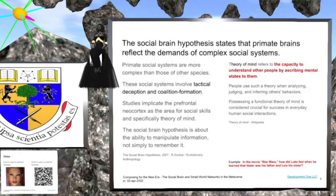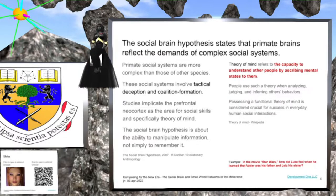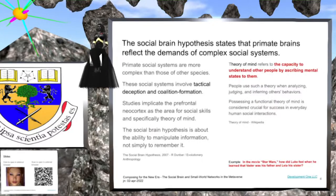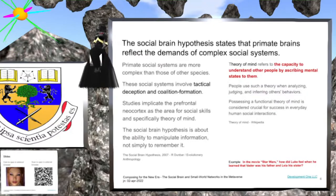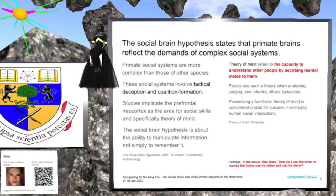In essence, we are running mental simulations in our brains — one for each relationship that we maintain. Close relationships require detailed and resource-intensive simulations; for example, will he or she like this gift? Medium and distant relationships take fewer resources, unless we move them closer due to changes in our circumstances or work. For unknown relationships beyond our 1,500 cognitive limit, we use stereotypes until and unless we move those unknowns closer.